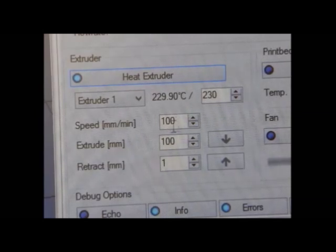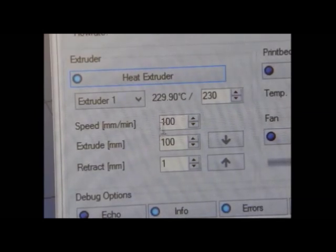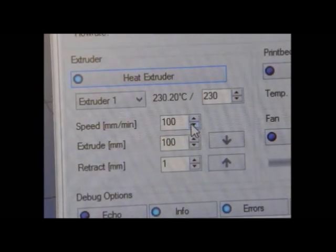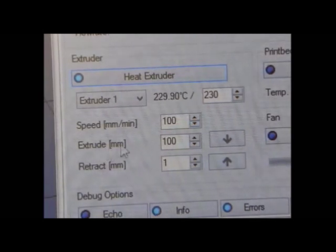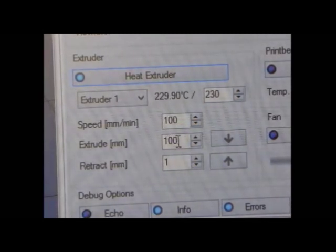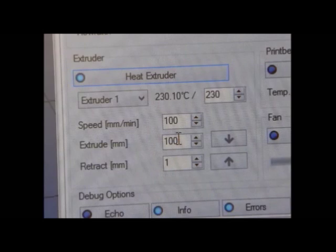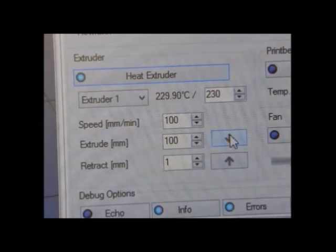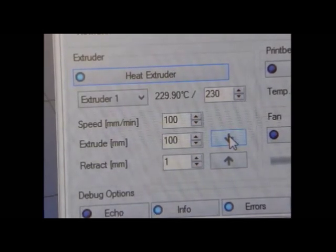Now in Repetier Host, set the speed mm per minute to 100 and extrude 100mm. Then click this extrude button.